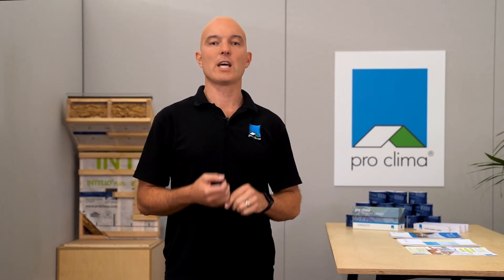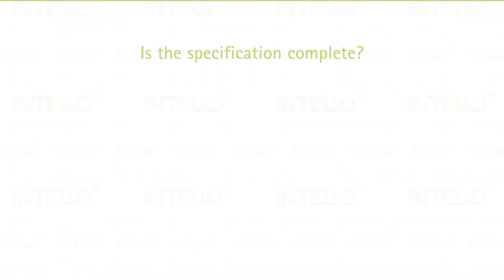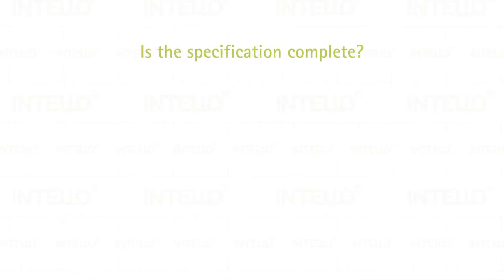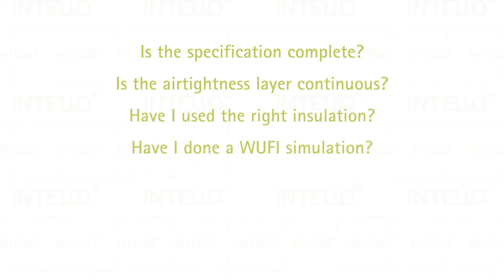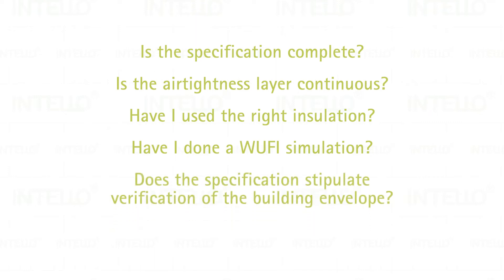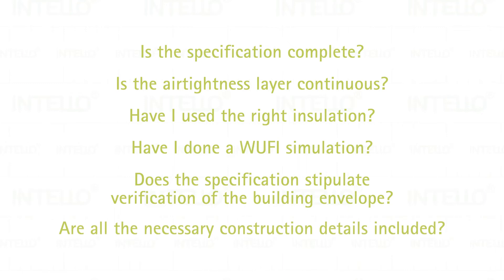As part of your specification process, it's a good idea to have a bit of a checklist. Ask yourself: Is the specification complete, including tapes and sealants? Is the airtightness layer continuous? Have I used the right insulation? Have I done a WUFI simulation to make sure my wall assembly will work? Does the specification stipulate verification of the building envelope using a Wincon fan or a blower door? Are all the necessary construction details included, especially things like internal walls, mid floors, windows and ceilings?